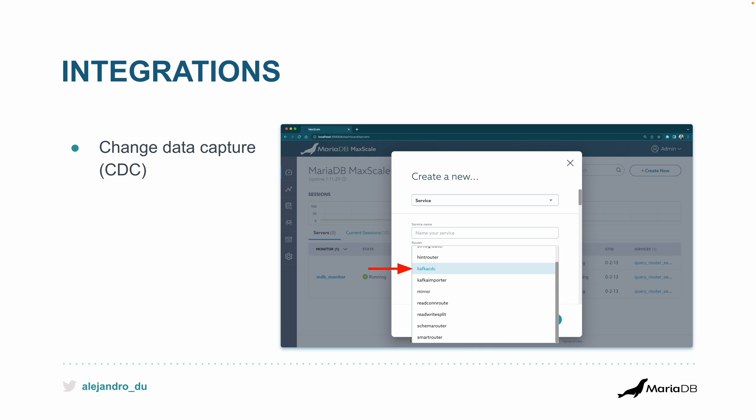This happens automatically from the database — no need to implement anything or add extra dependencies, as long as you already have the proxy. And the opposite is also possible: data ingestion through Kafka. You receive those changes and do whatever you want, like writing to a column store for fast analytics — so it's both importing and exporting to Kafka.